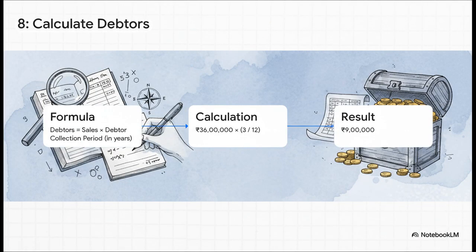Now, for debtors, which you might know as accounts receivable. This number tells us how quickly the company gets paid by its customers. We know all sales are in credit, and the collection period is 3 months. Again, we convert to years, that's 3 divided by 12. We multiply that by our total sales of 36 lakhs, and we get debtors of 9 lakh rupees.